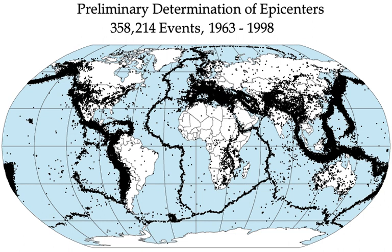In recent studies, geologists claim that global warming is one of the reasons for increased seismic activity. According to these studies, melting glaciers and rising sea levels disturb the balance of pressure on Earth's tectonic plates, thus causing an increase in the frequency and intensity of earthquakes.